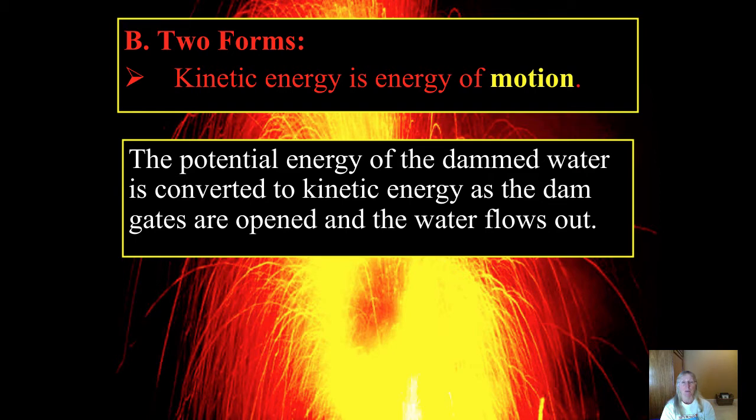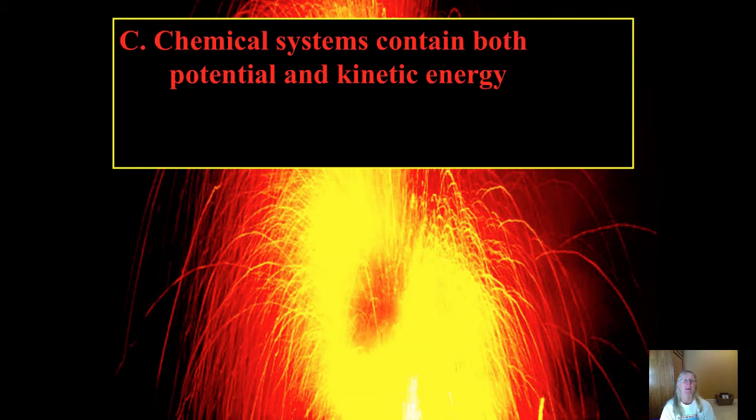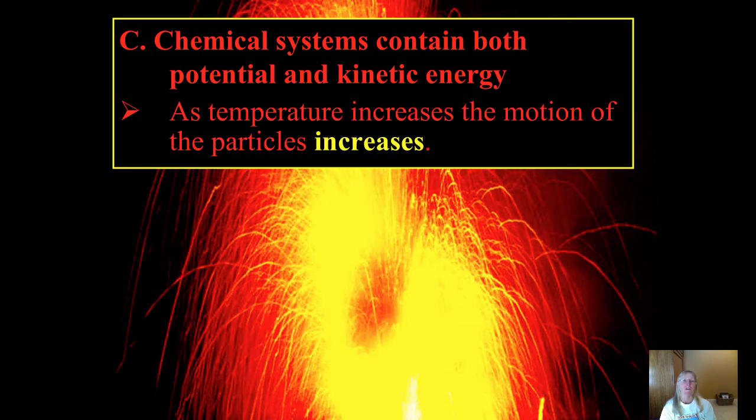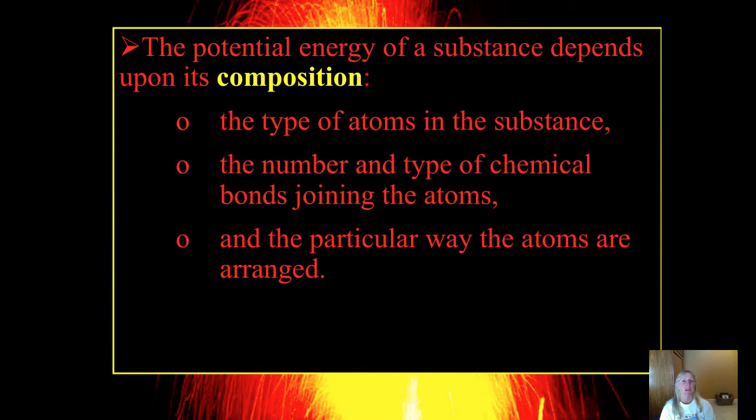So the second form is the energy of motion. And I just would like to point out, we do have it spelled correctly this year. The potential energy of the dammed water is converted to kinetic energy as the gates are opened and the water flows out. Chemical systems contain both types of energy. You've already learned as temperature increases, that's what our definition of temperature is. It's the average kinetic energy, and so that will be increasing with increasing temperature. The potential energy depends upon the chemical composition, such as the type of atoms that are joined in the substance, the number of them and the types of chemical bonds, and particularly how they are arranged with each other.